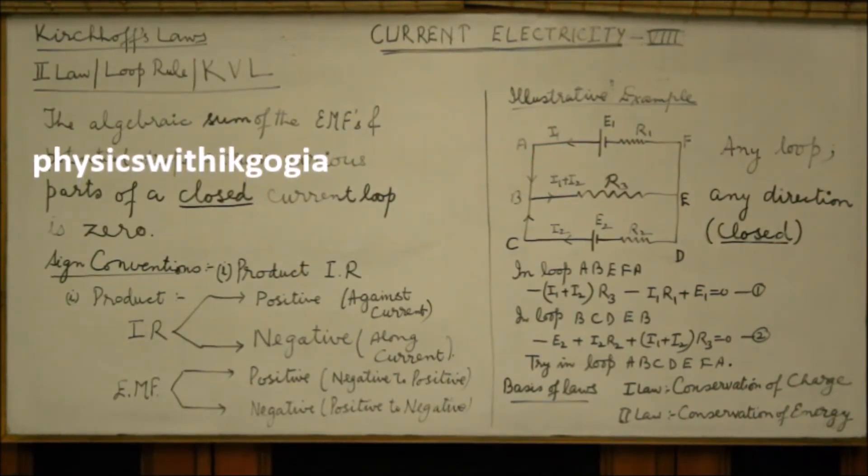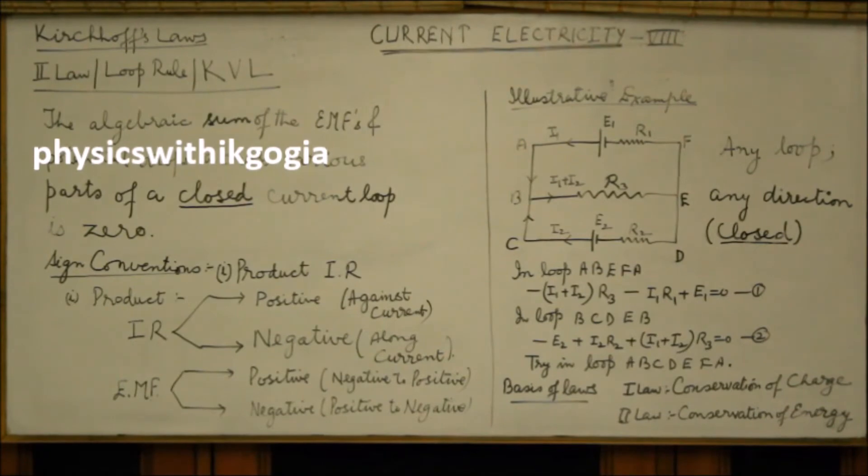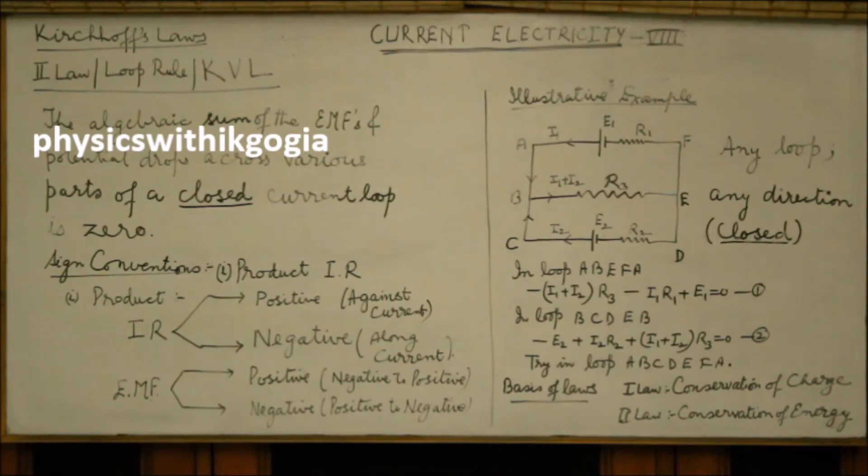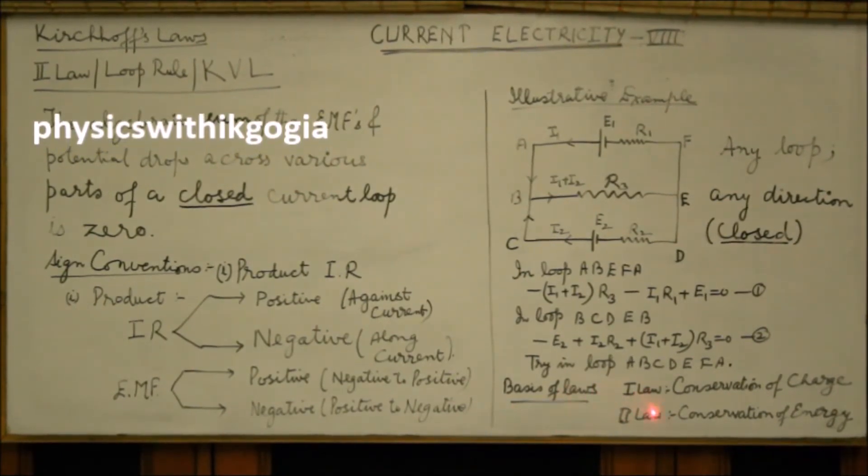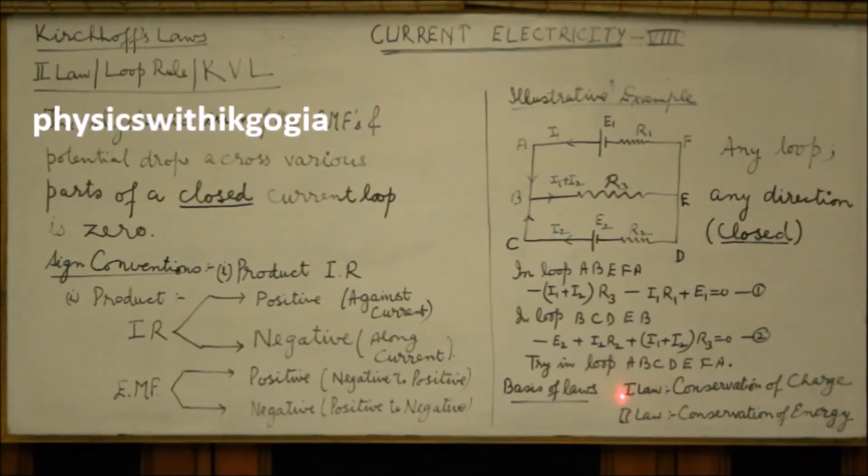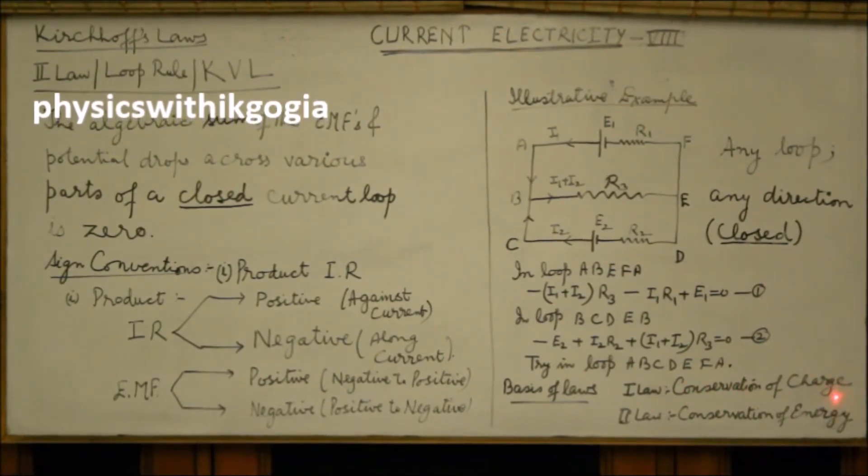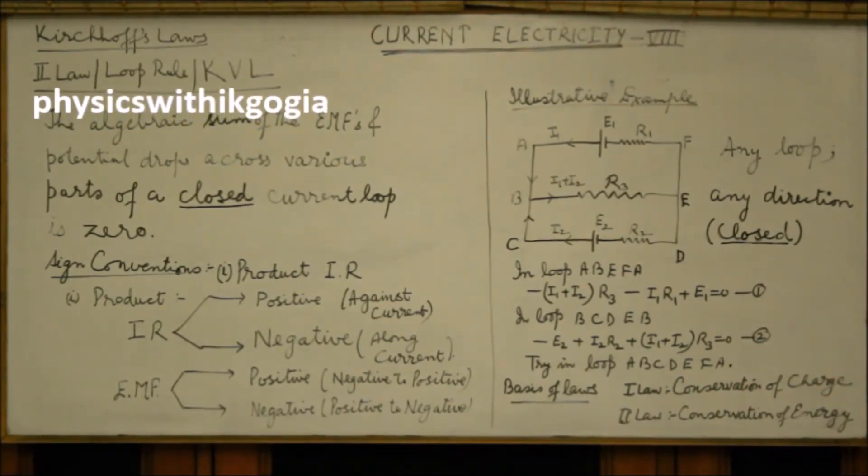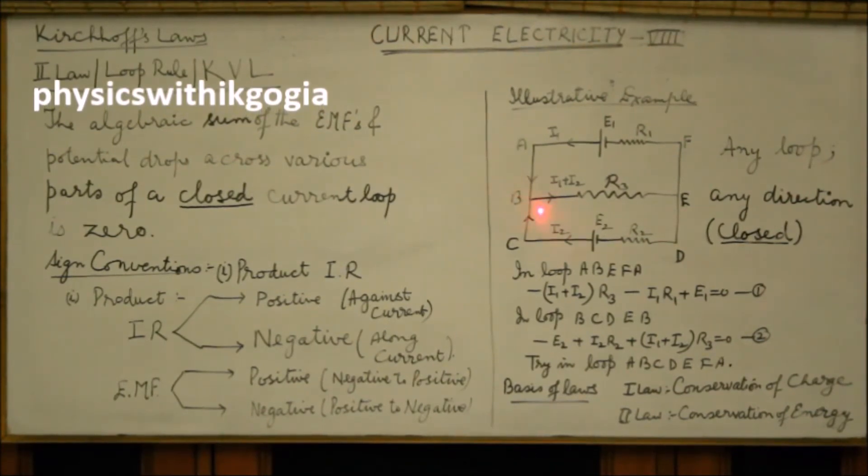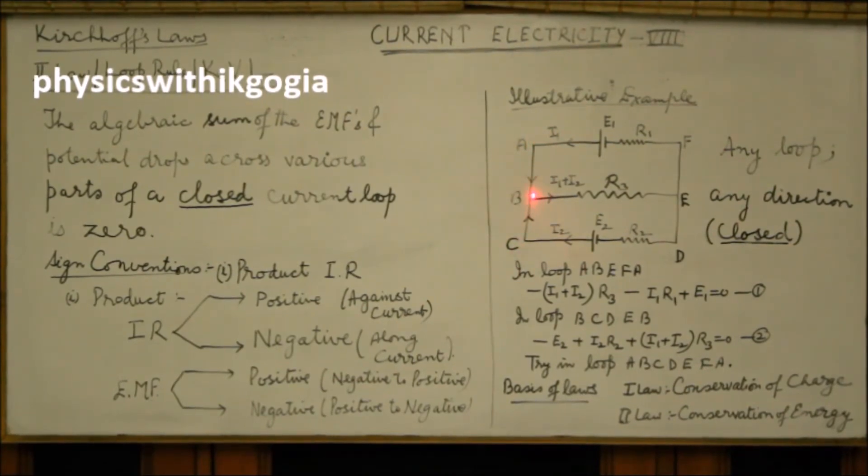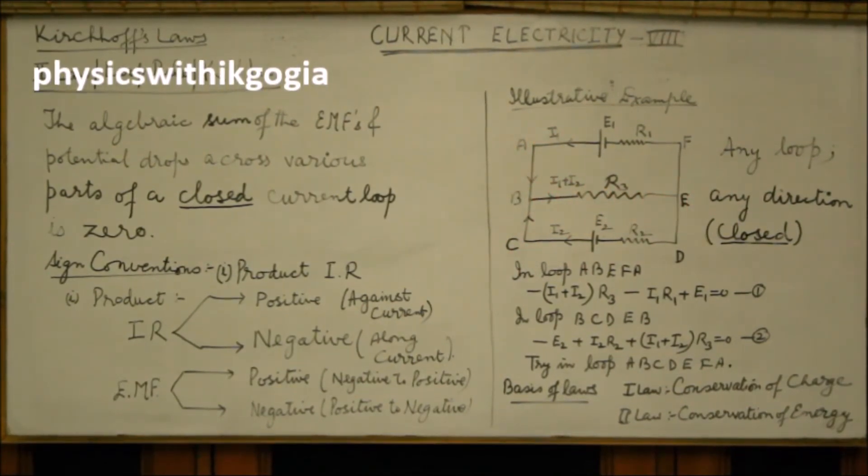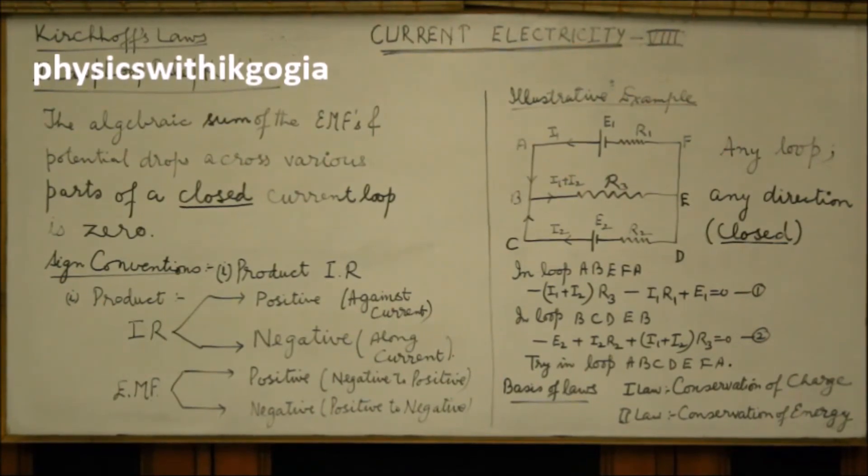Now the laws, that is the loop rule and the current or junction rule, they have certain basis. The first law, that is the junction rule or current law, is based on conservation of charge. Remember, in the circuit at a junction, we don't have any source or sink of charge. Therefore, incoming charge in one second is equal to the outgoing charge. That is, the conservation of charge leads us to first law.